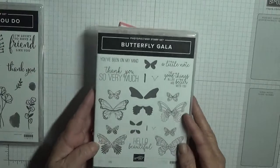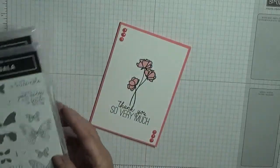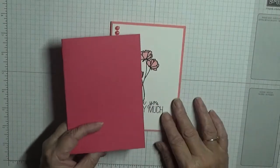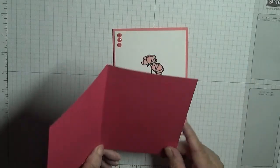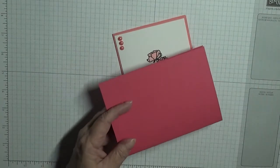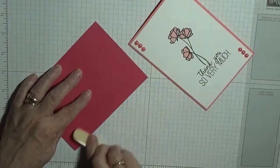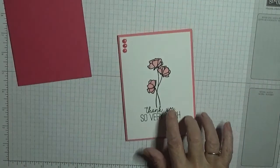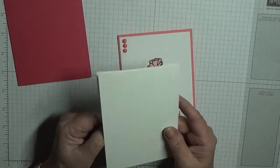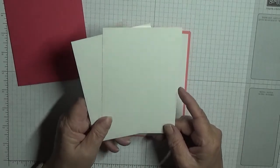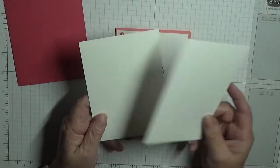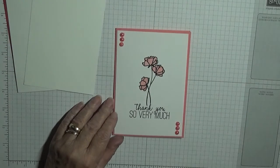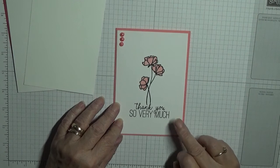And that one's from Butterfly Gala. The cardstock is Lovely Lipstick I'm going to use this time. It's 8 and a quarter by 5 and 7/8, scored at 4 and 1/8, folded in half and burnished. And two pieces of Whisper White. I'm using Whisper White as it is Stampin' Up stuff we've got to use. So you need two pieces.